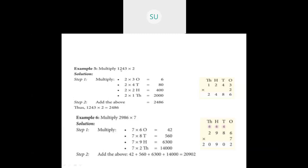For a 4-digit number — 1243 into 2 — we'll use the standard method. 2 threes is 6. Then multiply with tens: 2 into 4 is 8. Then 2 into 2 is 4. And 2 into 1 is 2. So the answer is 2486.